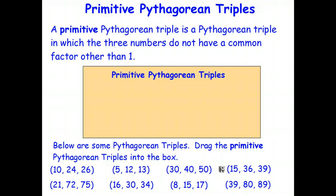Okay, let's see what you came up with. So, well, 5, 12, 13 we've already done, so that's an easy one. 10, 24, 26. Well, they all have a factor of 2. So therefore, that's not a primitive Pythagorean triple. 30, 40, 50. They all have a common factor of 10.